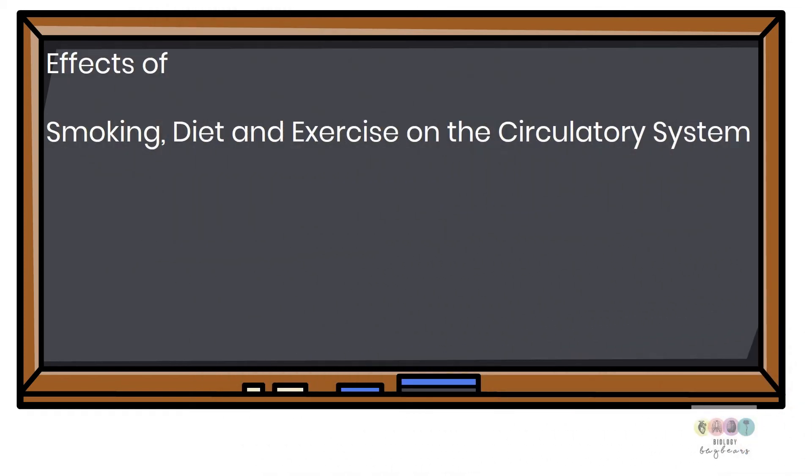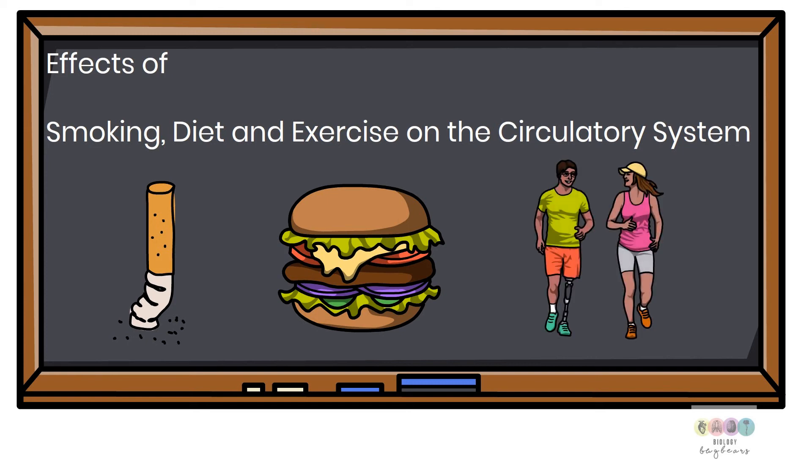So next, go on and study the effects of smoking, diet, and exercise on the circulatory system. Why is smoking so bad? Why is eating a diet high in fat and salt bad? And why is exercise good?